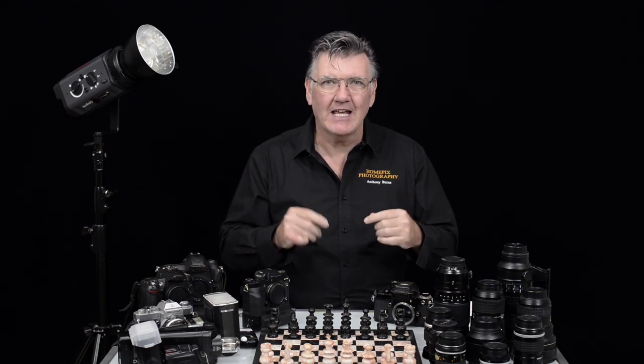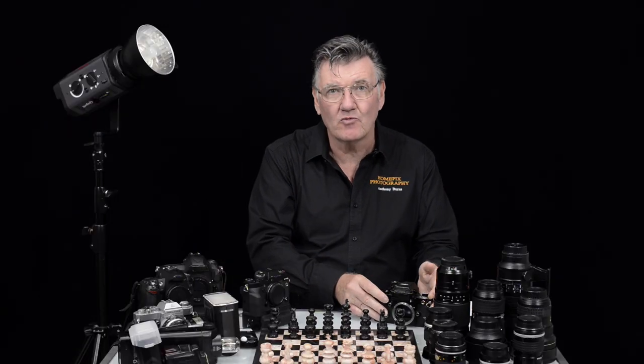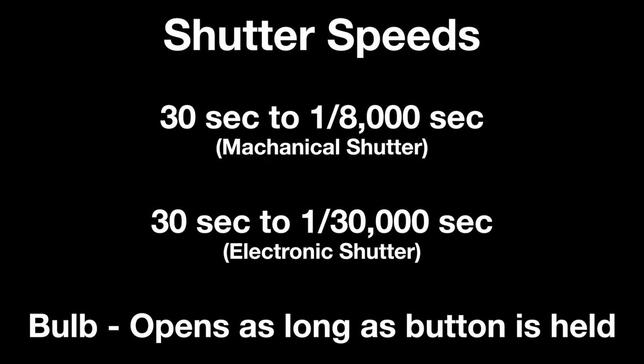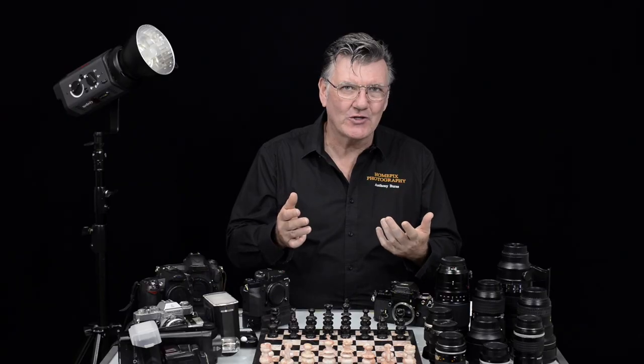The next one is shutter speed. Shutter speed is self-evident: how fast does that shutter open and close? A traditional mechanical shutter will go all the way up to one eight-thousandth of a second. A mirrorless camera can go all the way up to one thirty-thousandth of a second — incredibly quick. You're going to use it as a tool.